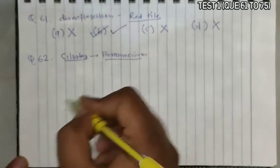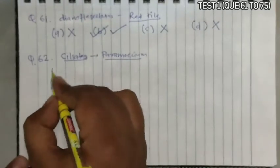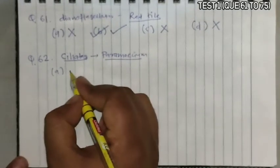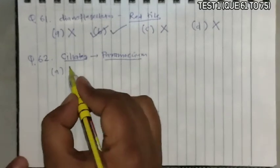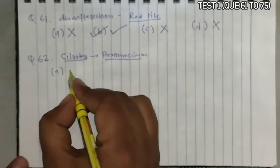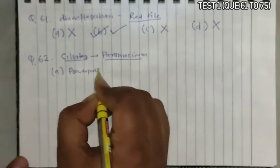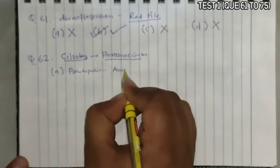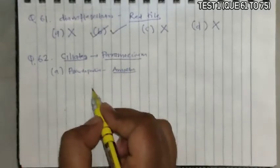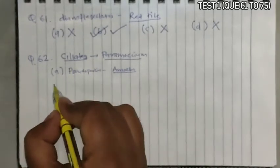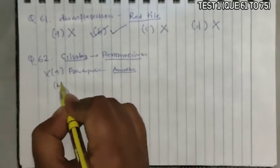The question is how Paramecium differs from other protozoans. Option A says 'using pseudopodia for capturing prey.' Pseudopodia is a characteristic of amoeba or amoeboid protozoans, not ciliates, so this is an incorrect option.